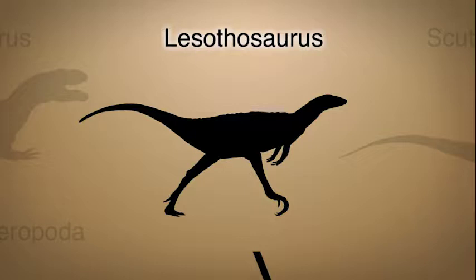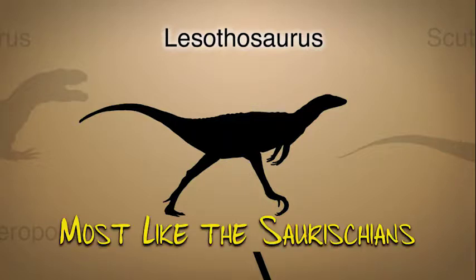Lesotosaurus is the first ornithischian we will discuss. It is at the base of the ornithischian side of the cladogram, meaning that of all the ornithischian dinosaurs, it is the most like the saurischians. The main character that makes it different is its bird-like hip structure.